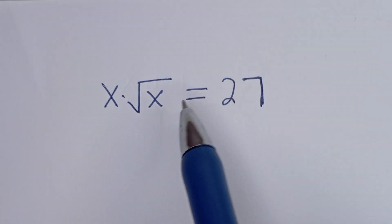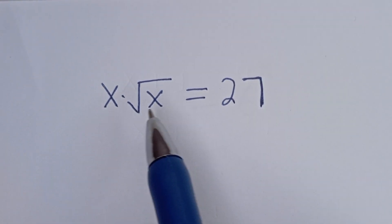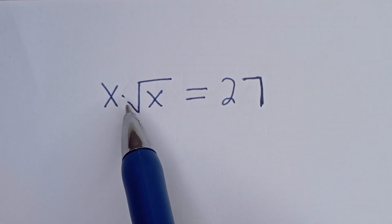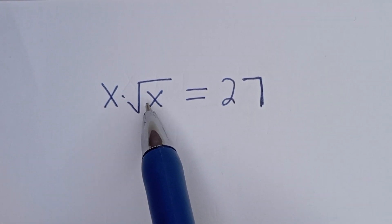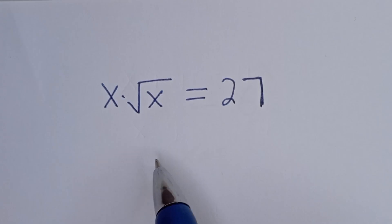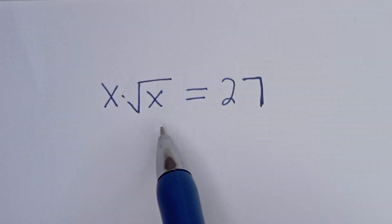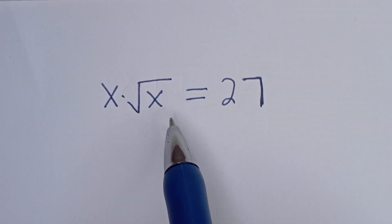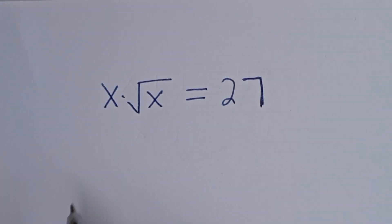Hello, how to solve for S in this equation: S multiplied by root of S is equal to 27. We are going to solve this equation using two methods.